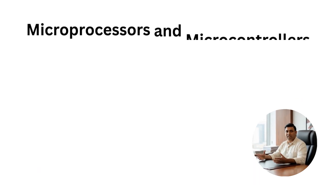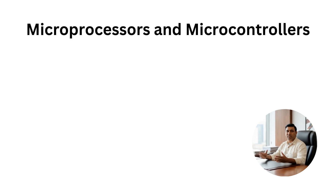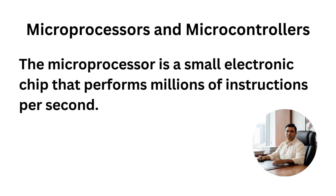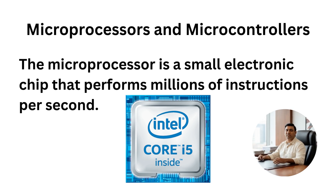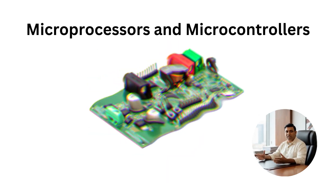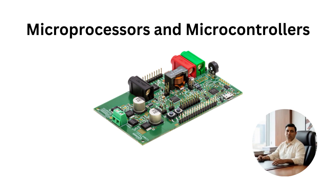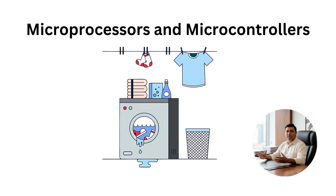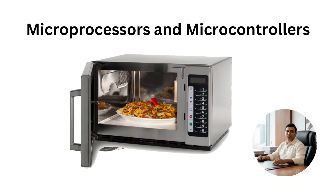Microprocessors and microcontrollers. The microprocessor is a small electronic chip that performs millions of instructions per second. It has evolved through generations from 4-bit processors in the 1970s to today's 64-bit multi-core processors. For specific tasks, we use microcontrollers — tiny computers on a single chip used in devices like washing machines, cameras, and microwaves. They control one function, but do it very efficiently.